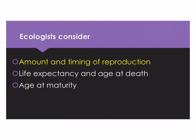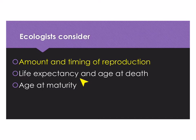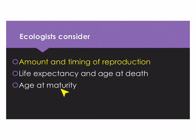So the three main things that ecologists consider when looking at life history are: the amount of reproduction and the timing, as I just mentioned; the life expectancy, and how old the individuals are at death — so how long is their lifespan; and then how old they are when they reach maturity and reproductive age.